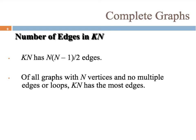The number of edges in K7: K7 has n times (n minus 1) all divided by 2 edges. Of all graphs with n vertices and no multiple edges or loops, K7 has the most edges. With complete graphs we're generally not working with multiple edges or loops.